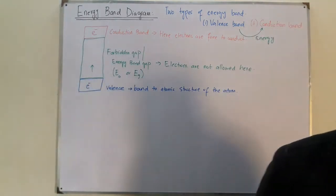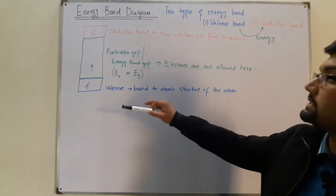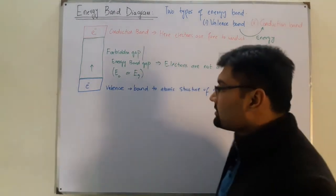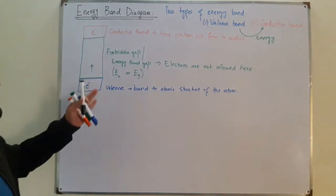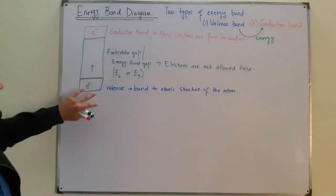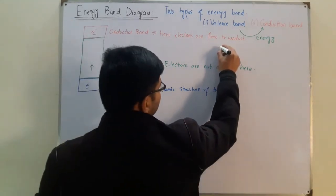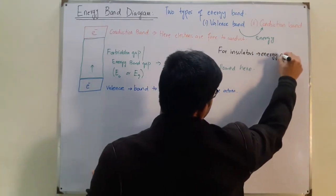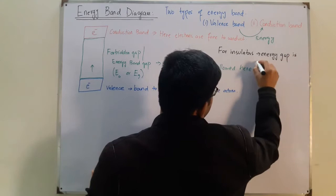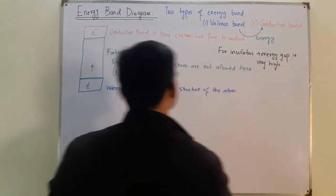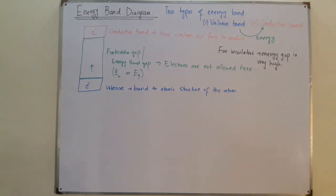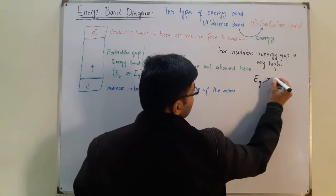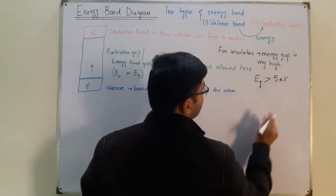Insulators are not good conductors partly because their forbidden gap is very high, requiring a large amount of energy to move an electron from the valence band into the conduction band. For insulators, this energy gap Eg is greater than approximately five electron volts.